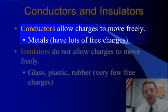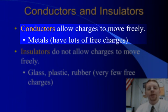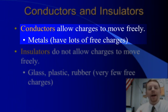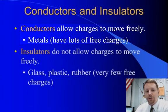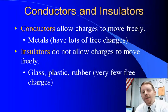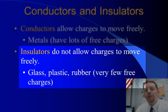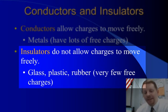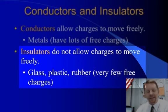Conductors are materials that allow charges to move freely. These are typically things like metals that have a bunch of free charge carriers, usually electrons. Metals are good conductors because they have a lot of free electrons to carry charge. On the other hand, insulators don't allow charges to move freely — they usually have very few free charges. Things like glass, plastic, and rubber are very good insulators.